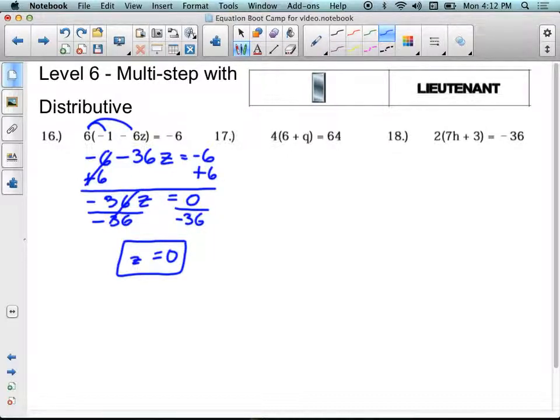Let's try the same thing for 17. We're going to first do the distributive property. 4 times 6 is 24. 4 times q is plus 4q, and that equals 64.